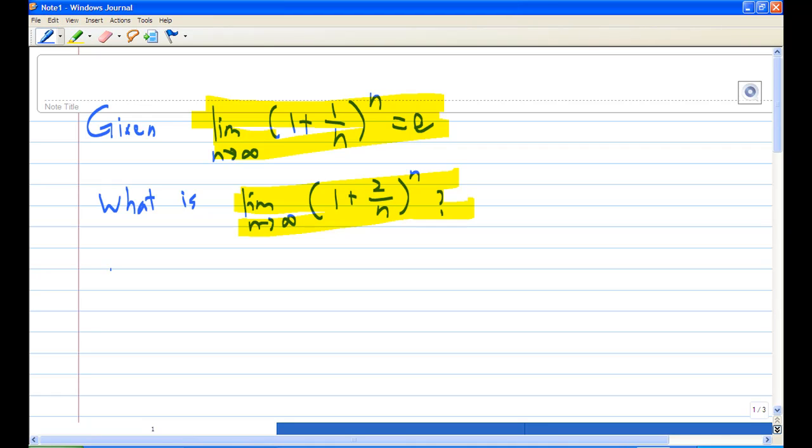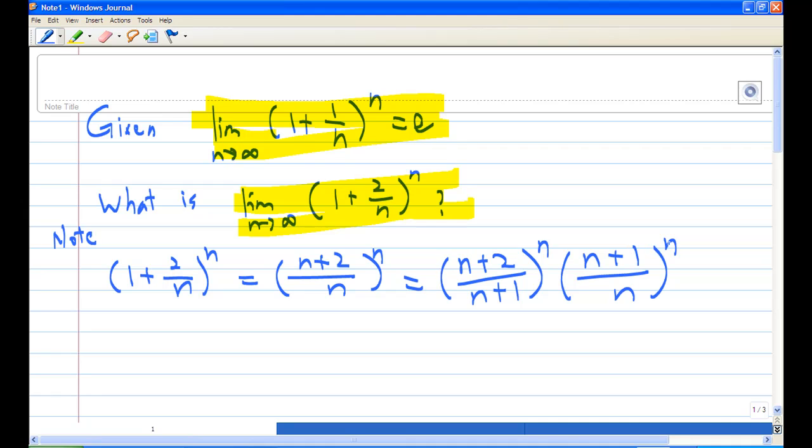Now the working is like this. We can look at (1 + 2/n)^n equals (n+2)/n raised power n, and this is equal to also (n+2)/(n+1) times (n+1)/n raised power n, and this is also equal to, simplifying to, (1 + 1/(n+1))^n times (1 + 1/n)^n.